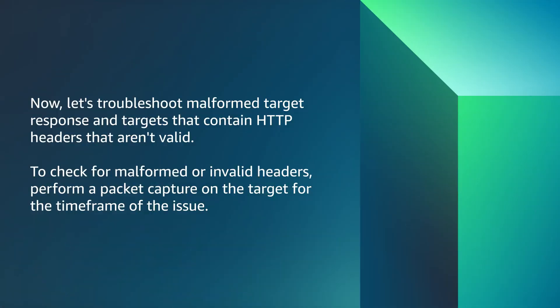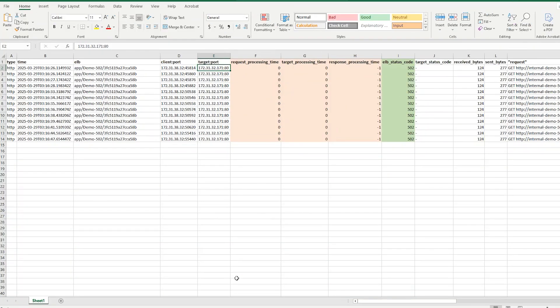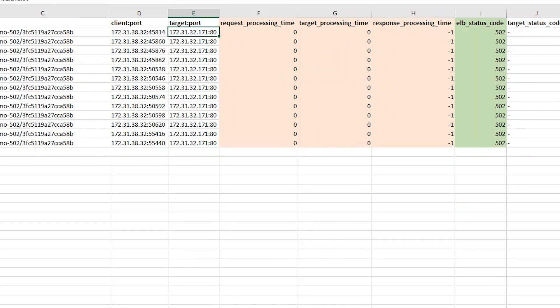Now let's troubleshoot malformed target responses and targets that contain invalid HTTP headers. To check for malformed or invalid headers, perform a packet capture on the target for the time frame of the issue. In the access logs, we see values of 0, 0, and minus one in the request processing time, target processing time, and response processing time fields respectively.